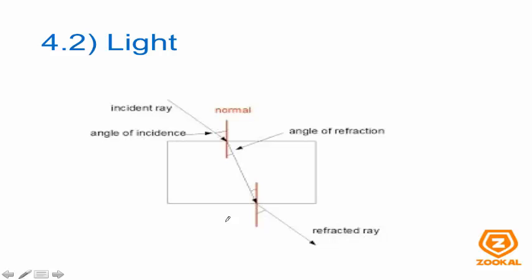Refraction takes place due to a difference in medium densities. For example, if this is air and this is a glass block, the incident ray comes in and is refracted from this point inside the glass block. The refracted ray is what comes out. As the ray enters and exits the glass block, the incident ray is coming in and the refracted ray is coming out. To remember: the incident ray is the ray coming in; the refracted ray is the ray coming out. These terms are used during the transition when light travels in and out of a medium.